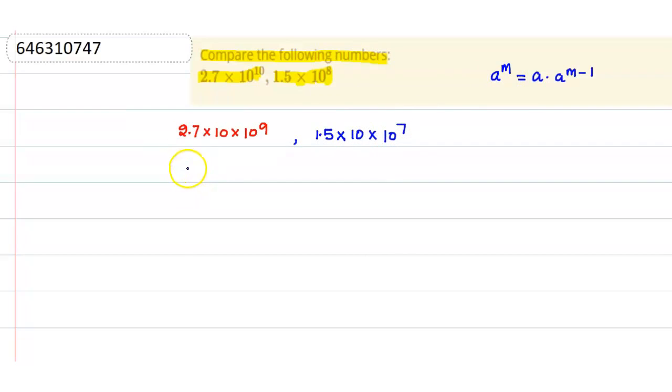This is written as 2.7 into 10 to the power 9. And this is 1.5 into 10 to the power 7.